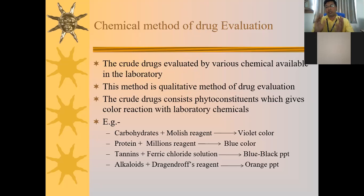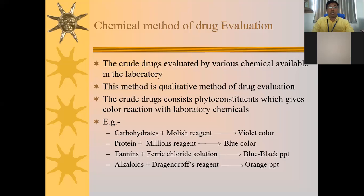The chemical method is a qualitative method of drug evaluation. It tells you whether a constituent is present but not how much — that is why it is called qualitative and not quantitative. The crude drugs consist of phytoconstituents which give a typical color reaction with laboratory chemicals.